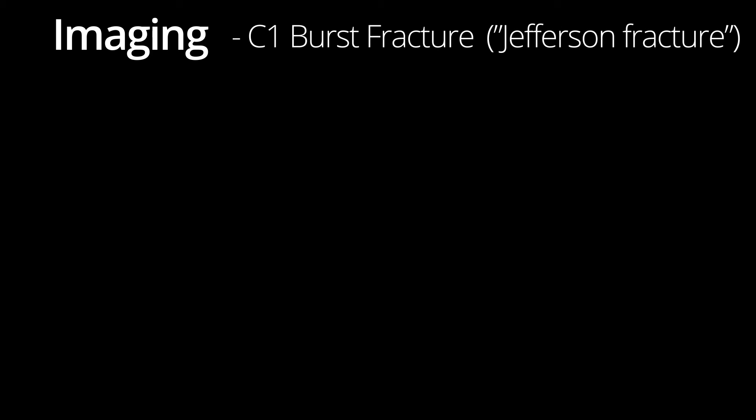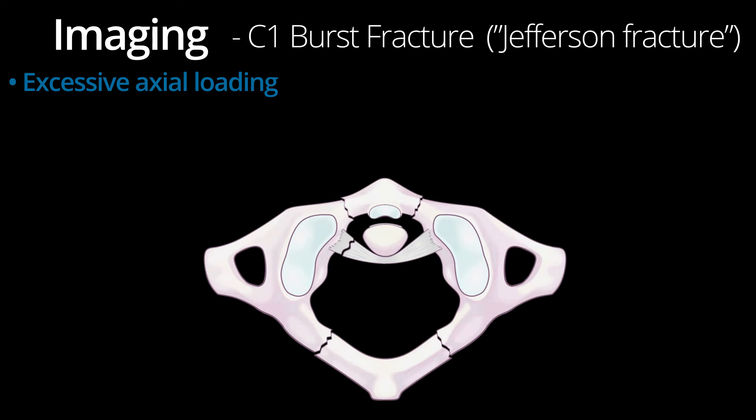C1 burst type fractures often go by the name Jefferson fracture. These fractures are frequently the result of an axial load type injury, such as diving into a shallow swimming pool head first. Given that C1 is a ring, fractures usually occur in more than one place. The anterior and posterior arches of C1 are the weakest spots of the ring and most common sites of fracture.